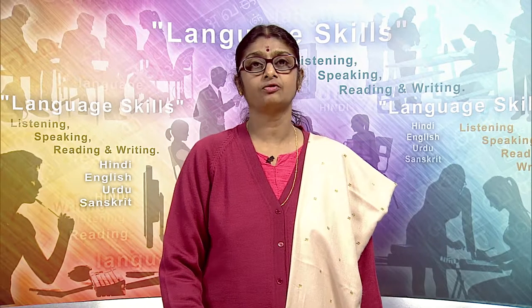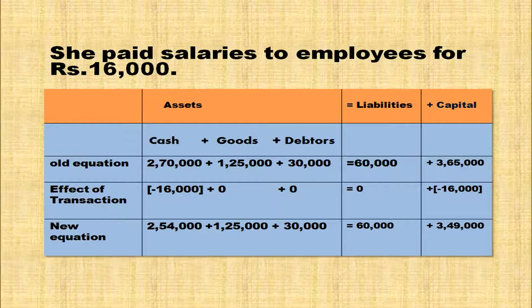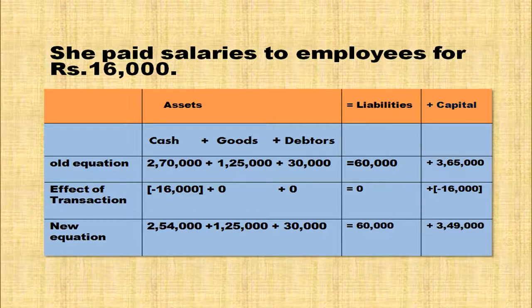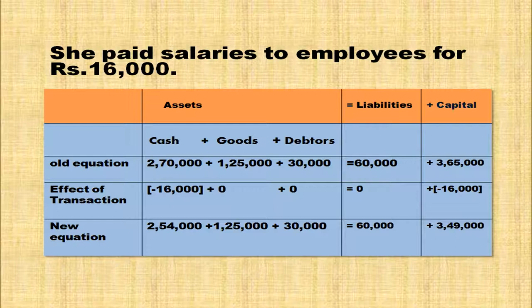Salaries paid to employees for rupees 16,000. When salaries are paid, cash is going from the business and from the capital. In the cash column deduct 16,000, and in the capital also deduct 16,000. New equation: cash 2,54,000 plus goods 1,25,000 plus debtors 30,000 equals liabilities 60,000 plus capital 3,49,000. That is 4,09,000 on both sides — accounting equation is satisfied.